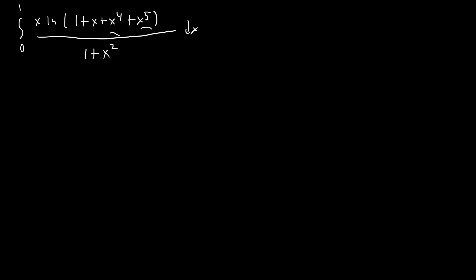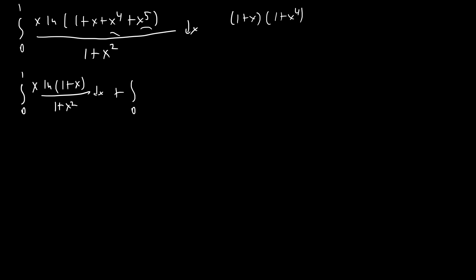The trick is to stay calm and look for ways to simplify. One thing you might notice right away is that the argument of the natural logarithm factors as (1 + x)(1 + x⁴). So we can split that natural log and get two separate integrals: the integral of x·ln(1+x)/(1+x²) dx plus the integral from zero to one of x·ln(1+x⁴)/(1+x²) dx.